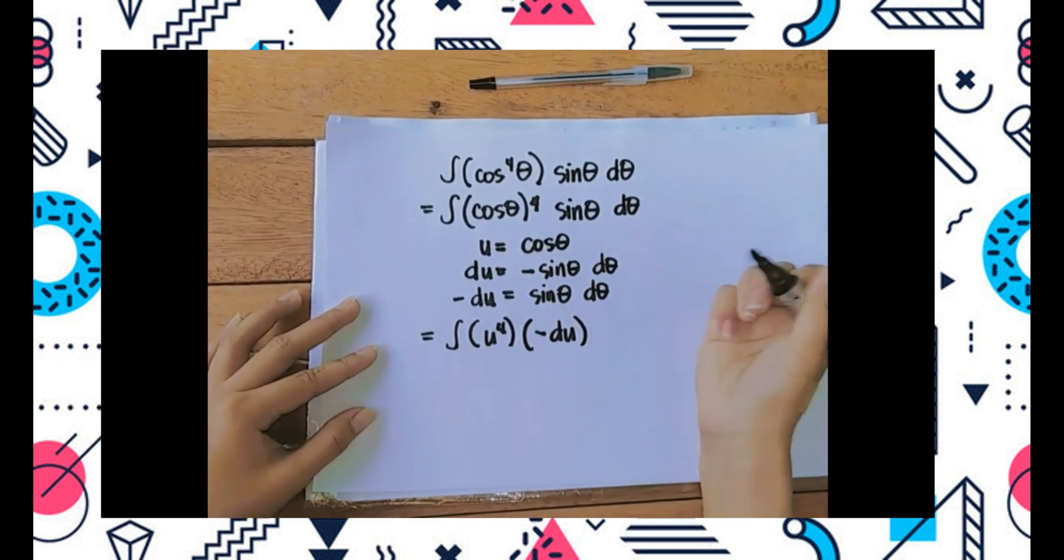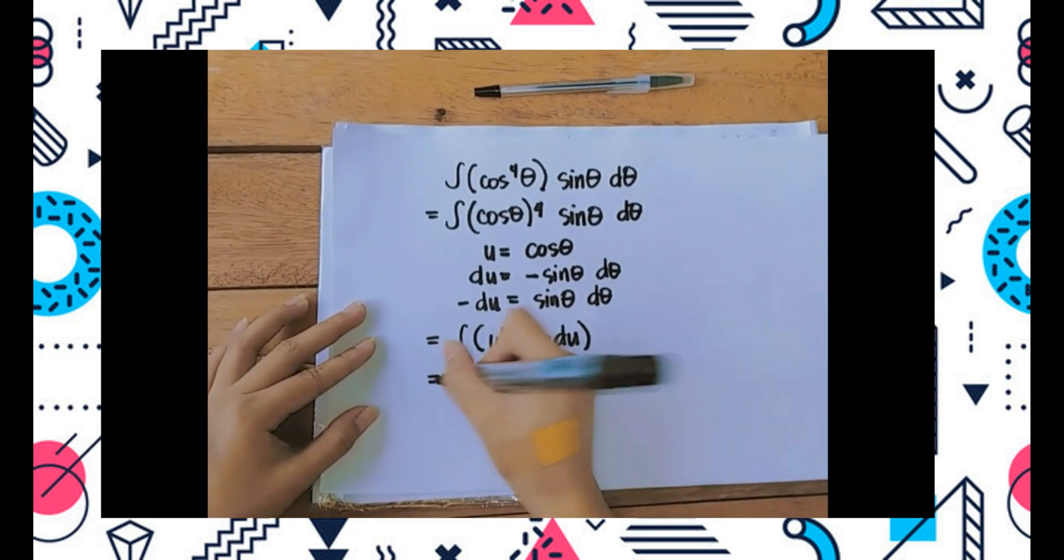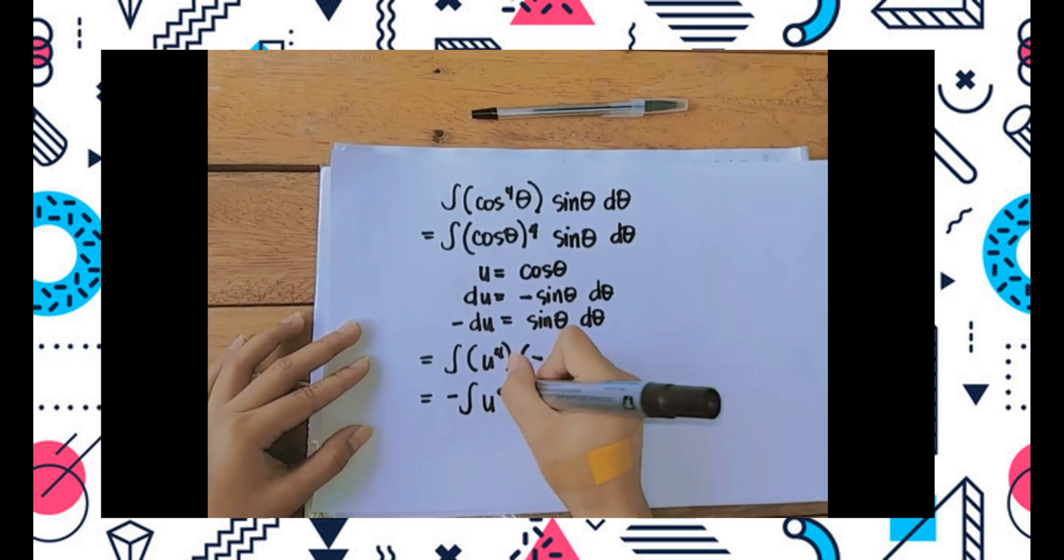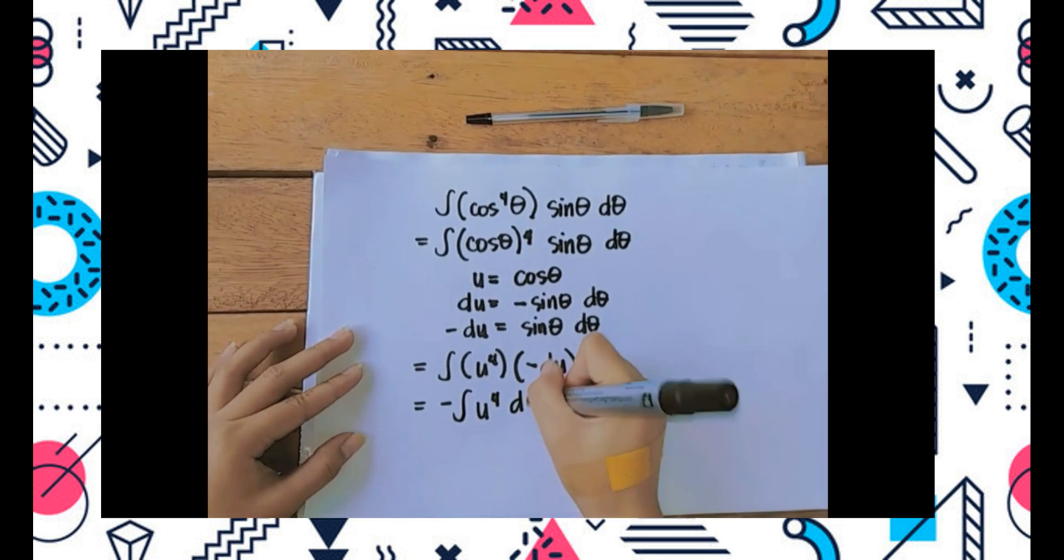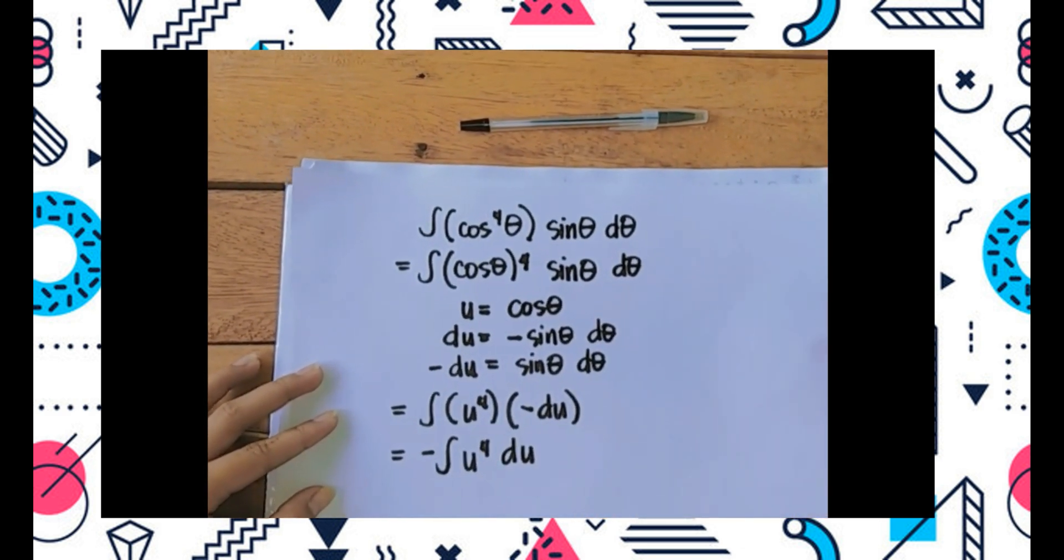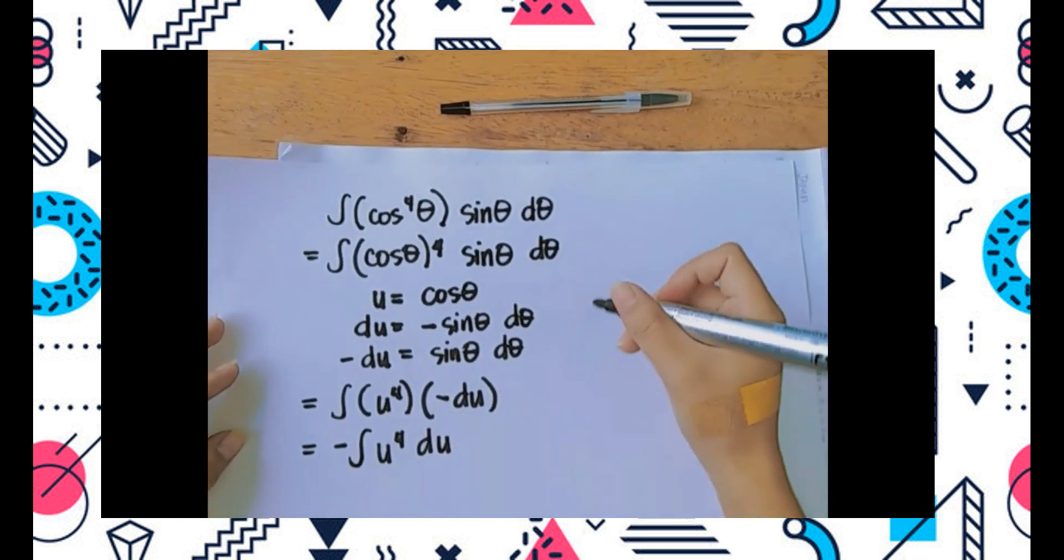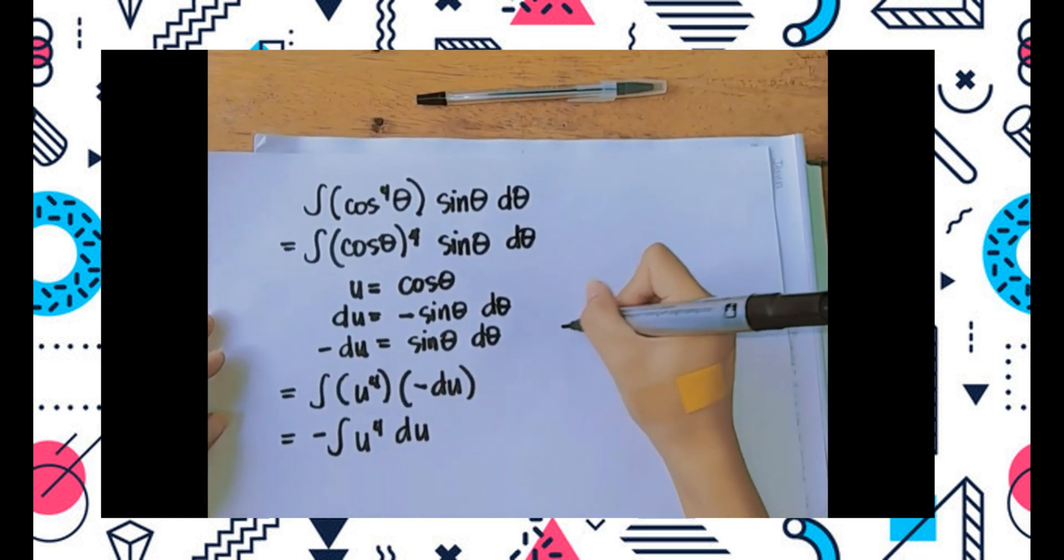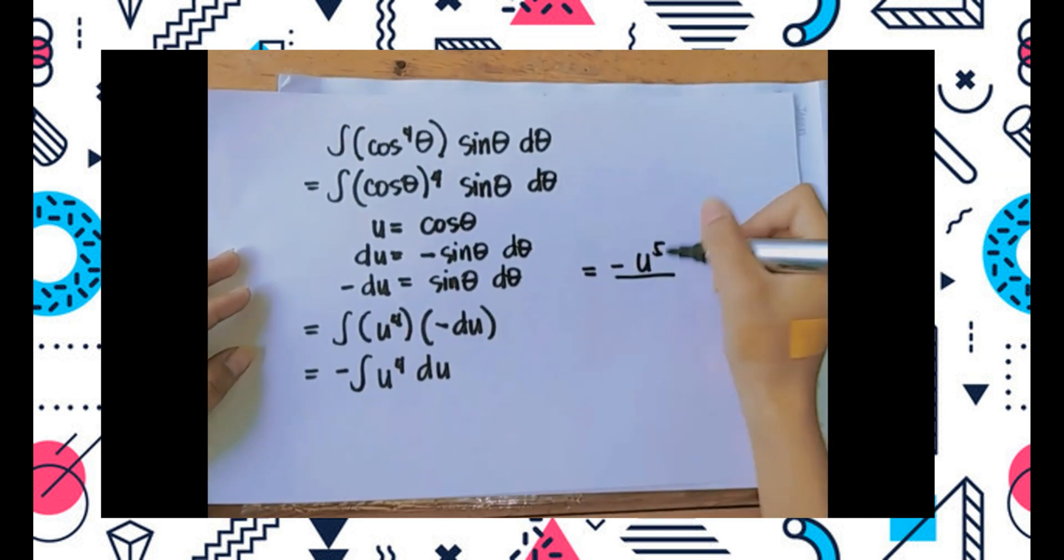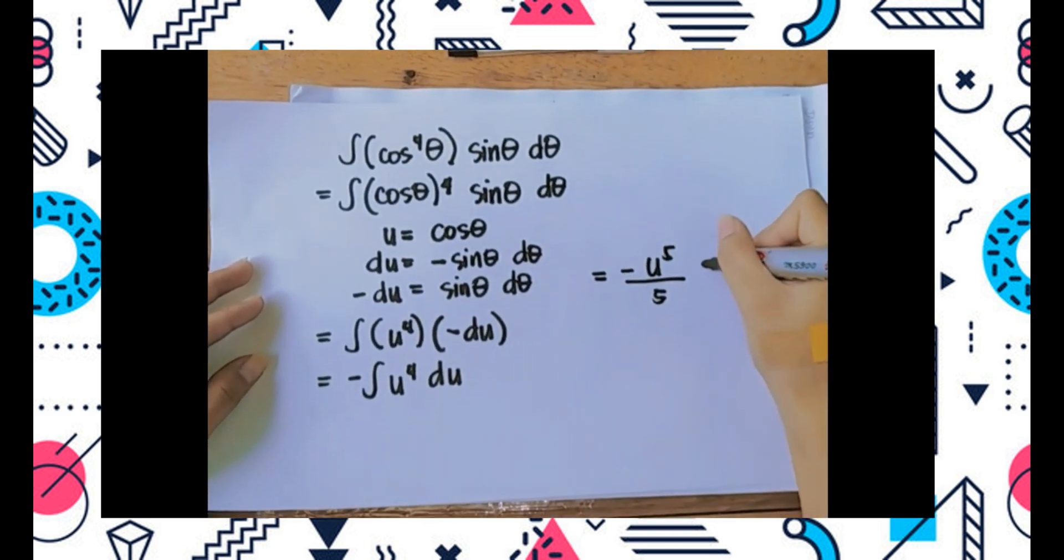You can think about the negative as simply being a negative one and you can pull that all the way out. Now all you have to do is integrate u to the fourth, which becomes u to the fifth over five plus c. Then we'll simply plug back in what our original u-substitution was.